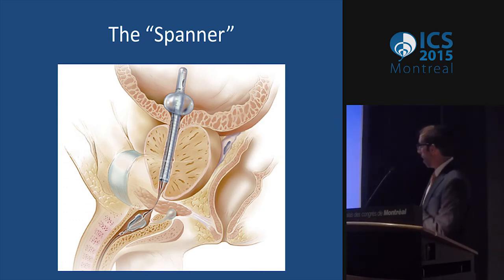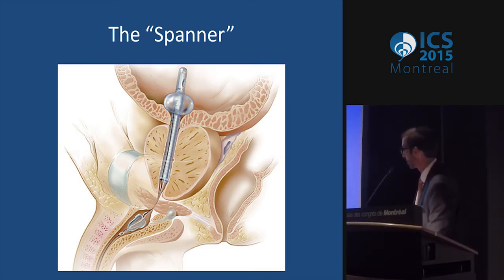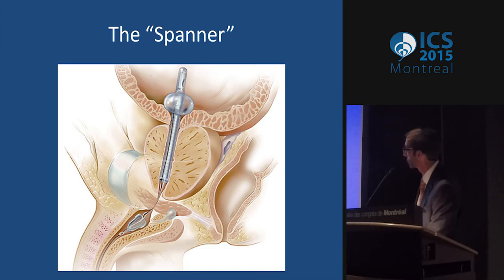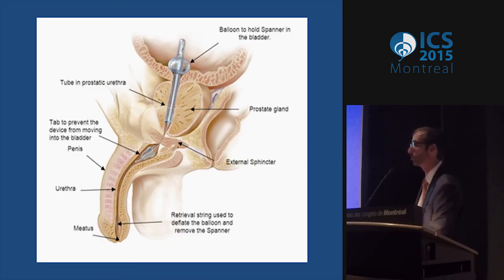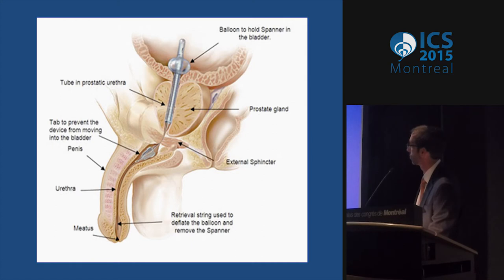The Spanner is generally for men with BPH. There's a little balloon that sits at the bladder neck, and this coated device traverses the prostate. It has a string so it can be retrieved and changed. Years ago they had the Urolume, a metallic stent — it looked good at the beginning but had a lot of problems down the road.